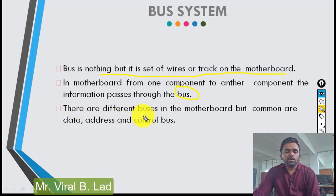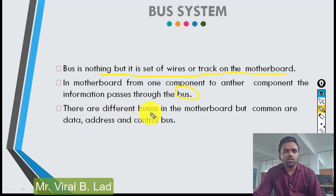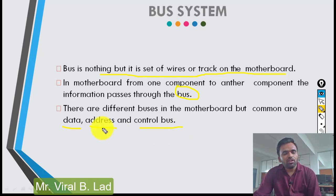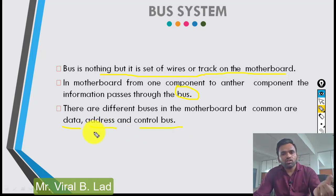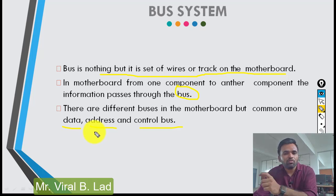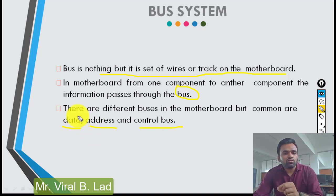There are 3 types of buses: data bus, address bus, and control bus. The data bus is used for data transfer — for example, hard disk data, USB, and pen drive data pass through the data bus.